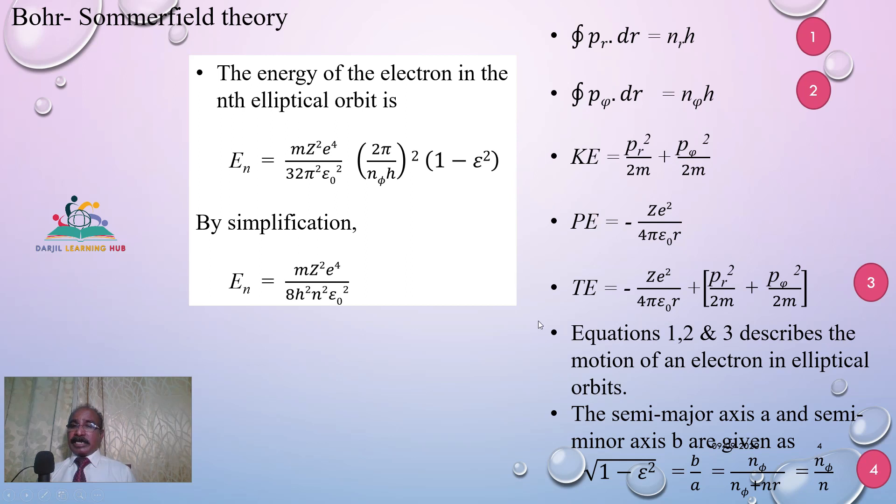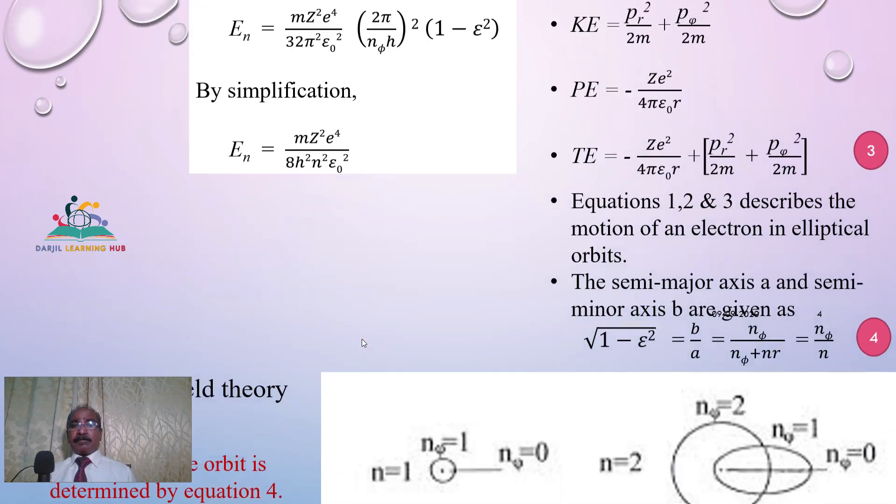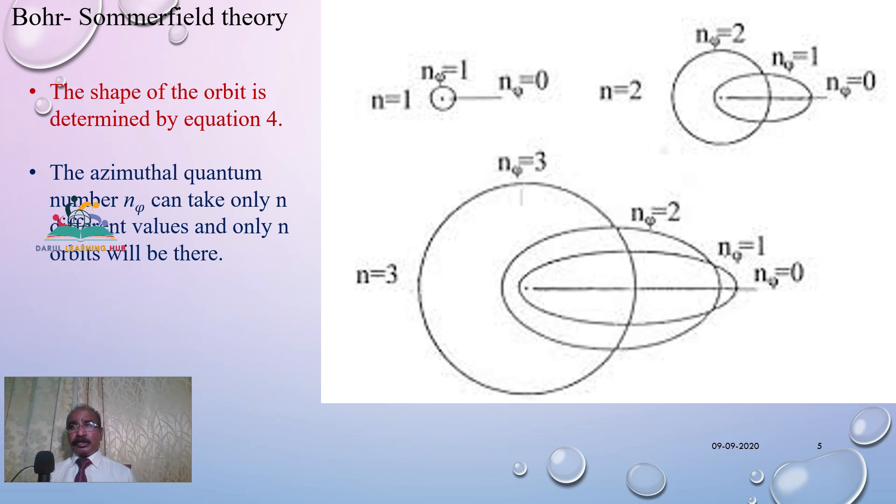All three equations describe the motion of an electron in the elliptical orbits. The elliptical orbits will have a semi-major axis a and a semi-minor axis b, which were given by equation number 4: square root of 1 minus ε² equals b/a, which will be equal to n_φ/n, where the energy of the electron in the nth elliptical orbit could be written by this equation. After substituting the value of 1 minus ε², where ε is the eccentricity of the ellipse, one could calculate the value of E_n like this.